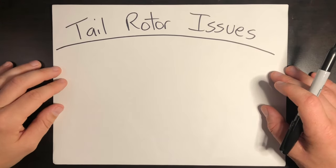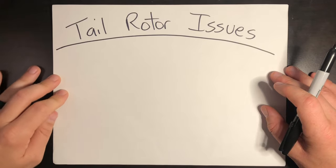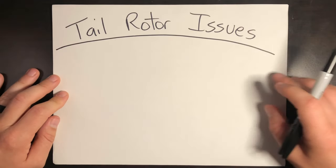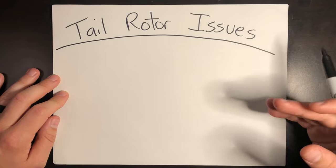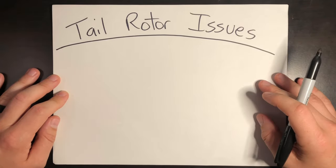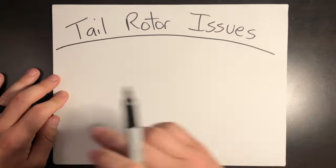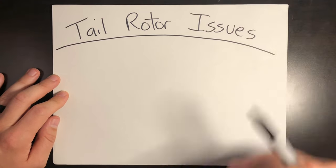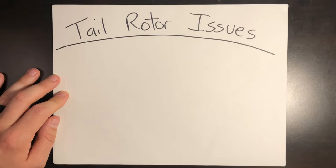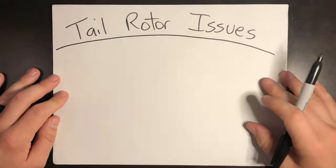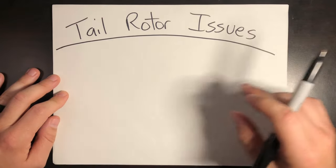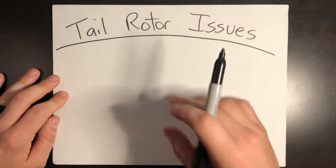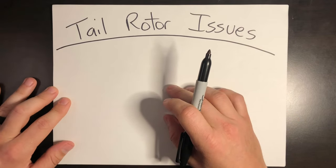Welcome back to Helicopter Lessons in 10 Minutes or Less. I'm Jacob and this video covers the types of tail rotor issues in helicopters. These are the types of things that cause helicopters to spin out of control and sadly crash moments later. Each one of the four subjects covered here could be its own video. Make sure you hit like and subscribe below, and we'll go ahead and get started.